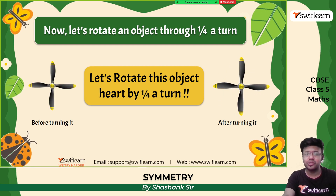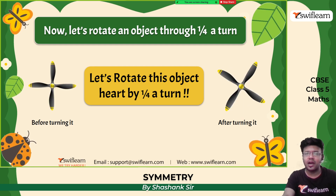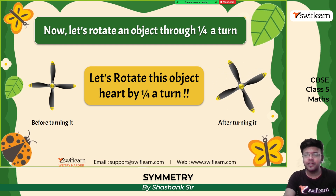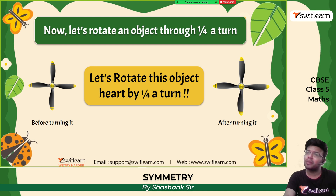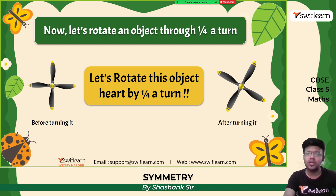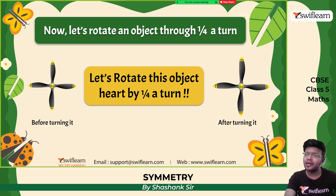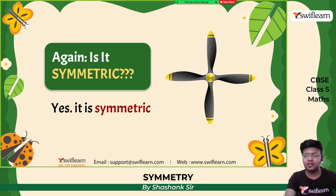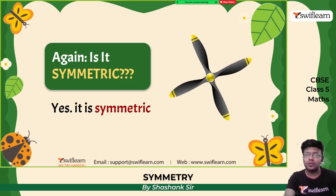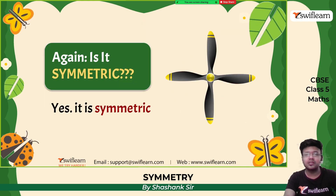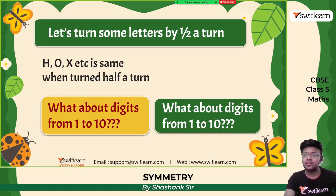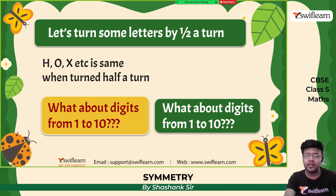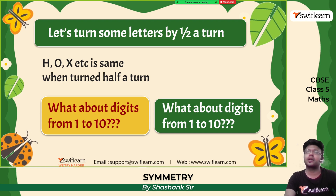Let us rotate this object by one-fourth turn. One-fourth turn is nothing but 90 degrees. This is a windmill. If I rotate this by one-fourth turn — 90 degrees — I am still getting the same object. So it is symmetric and if we rotate by every one-fourth turn, we will get the same symmetric shape.